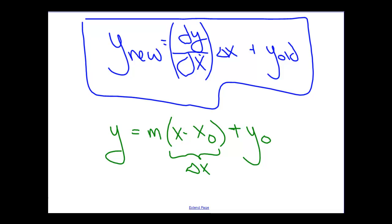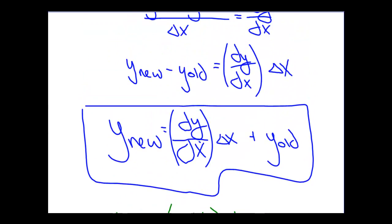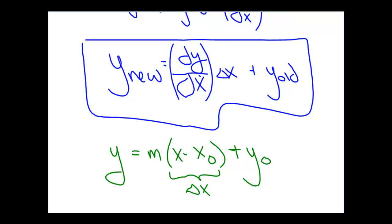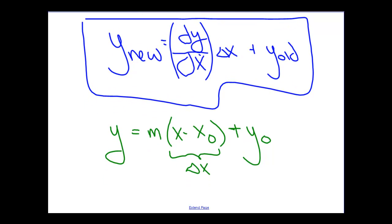What we're doing is we're going from the derivative. We started with the derivative up here, and we turned it into a linear approximation. And the linear approximation now allows us to use Euler's method to construct numerical solutions.